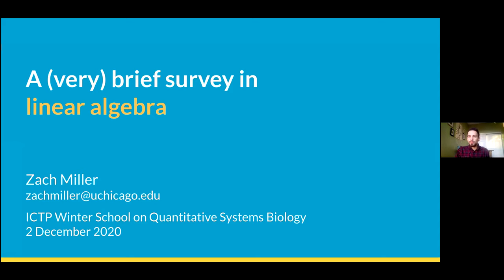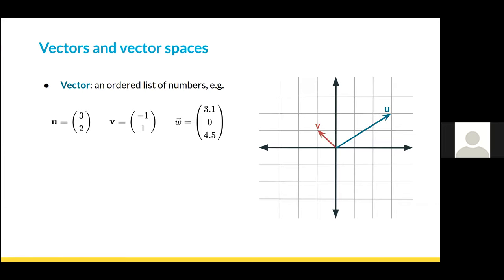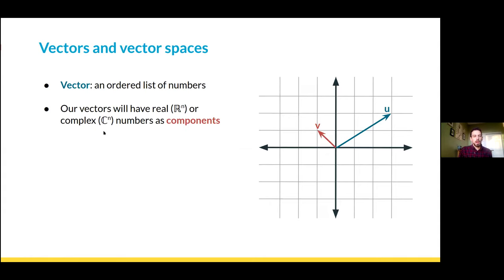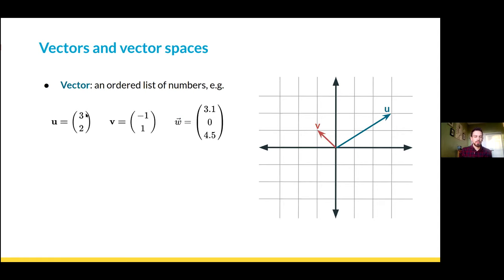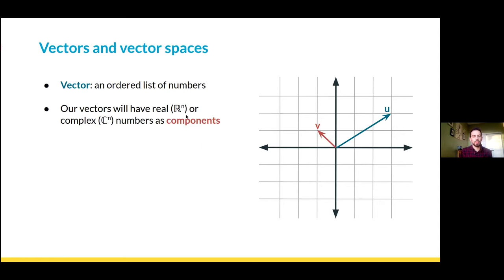Any introduction to linear algebra starts with the idea of a vector. For our purposes, a vector is an ordered list of numbers. A note on notation: vectors are often denoted with lowercase bold-faced letters or sometimes with lowercase letters with a little arrow on top. I'm going to stick to bold-faced letters, but I'm showing both here because you might see them written different ways.